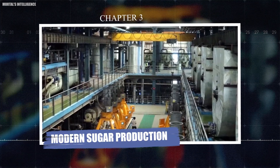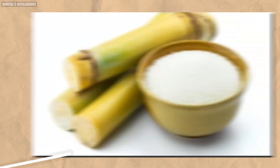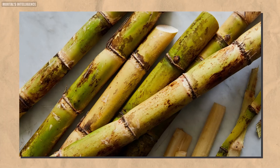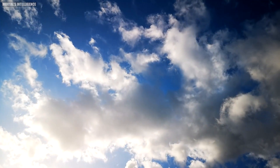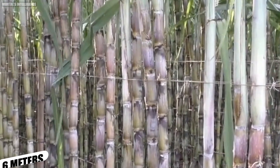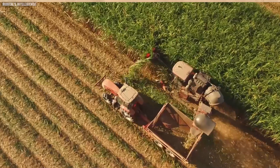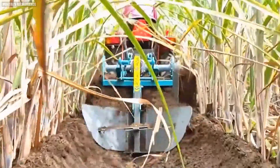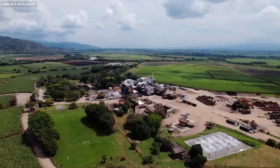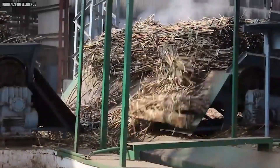Chapter 3: Modern Sugar Production. In today's world, sugar is produced on an enormous scale, primarily from two sources: sugar cane and sugar beets. The journey of sugar begins with the cultivation of these crops, which thrive in different climates. Sugar cane, a tall grass that can reach heights of up to 6 meters, is typically grown in tropical regions. Sugar beets, root vegetables that grow underground, are cultivated in temperate areas. The cultivation process for both crops is intensive and requires careful management.